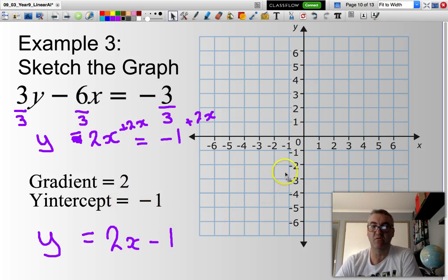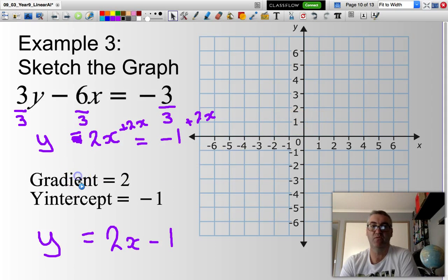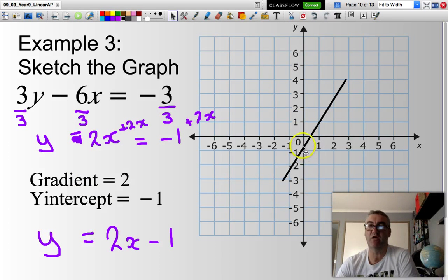So, I need to find negative 1 here. That's my first point. Then, my gradient is 2. So from that point, I'll go up 2 and across 1. That'll be the second point. So, I start at negative 1, go up 2 and across 1. There you have it.